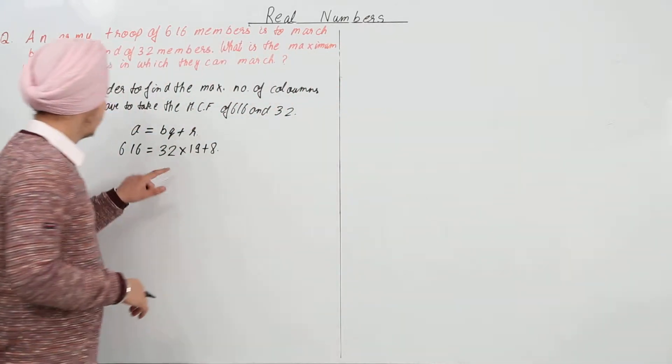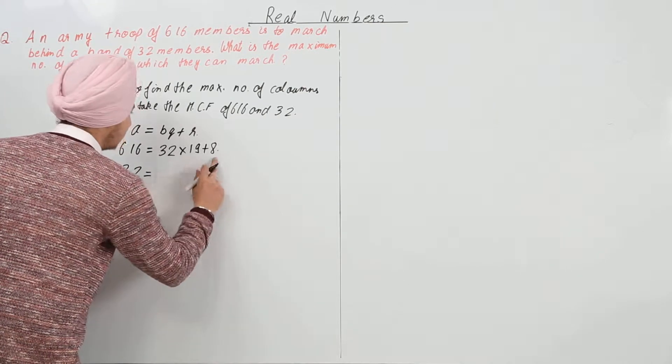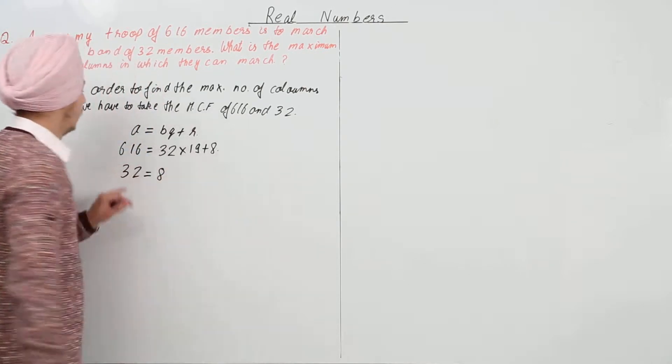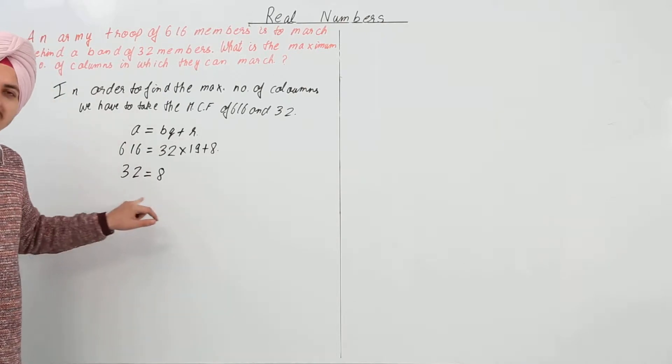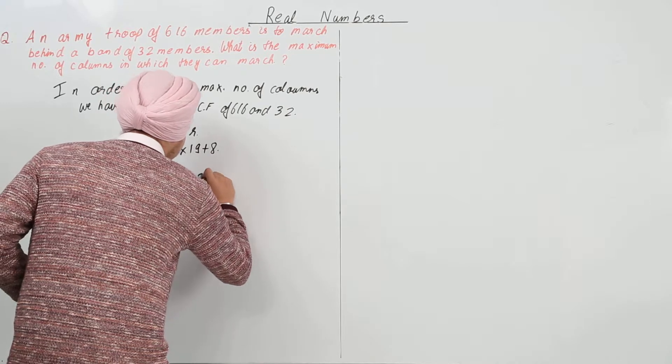So from here what we do is we take this 32 over here and this 8 over here, and we see 32 is equal to 8 into 4 plus 0.